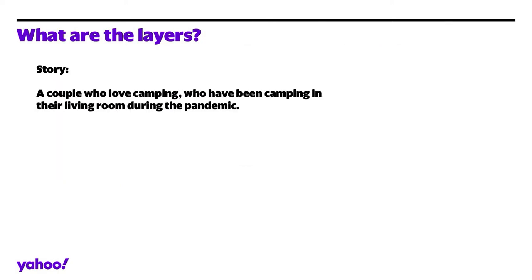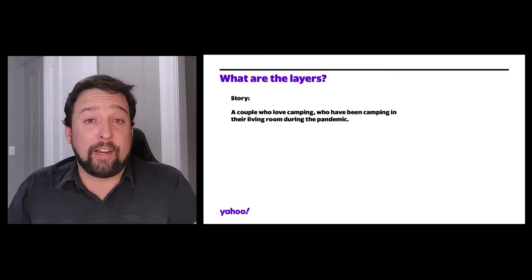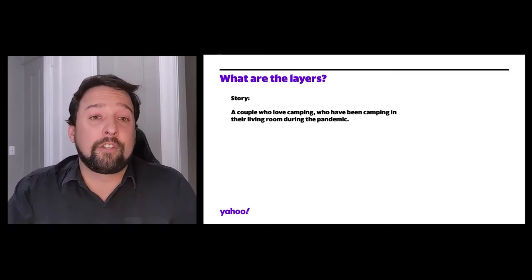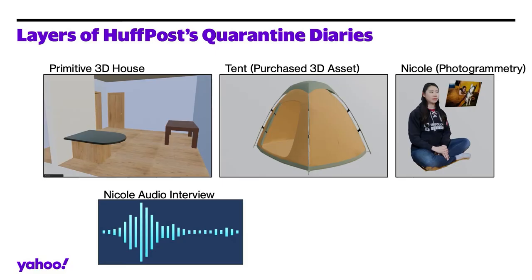With those layers in mind, let's talk about how you bring a vision into layers. Here's a basic story: a couple who loved camping had been camping. For us, the layers we chose were a representation of their living room, building a quick 3D model of some of that space. We focused on the tent as a really strange object to see in the living room — it becomes our primary storytelling object. The subject is the person shown in the sleeping bag with their dog, or working at their table with the tent over their shoulder. Then we included audio to help them tell their story, provide great quotes, and really set the stage so when you're standing inside their living room with the tent, you get to hear their voice.